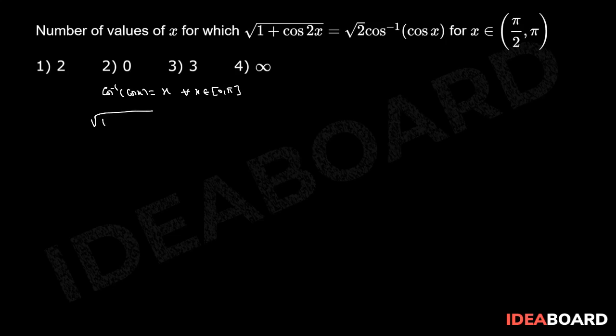Now given equation is √(1 + cos 2x) = √2 cos⁻¹(cos x).